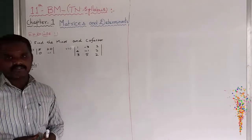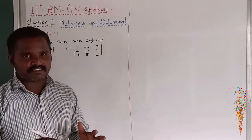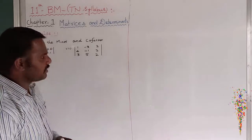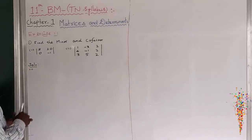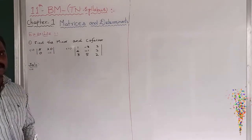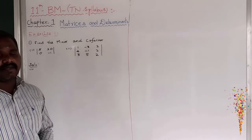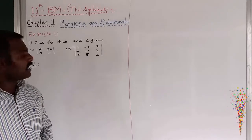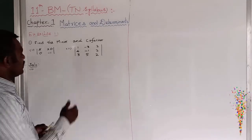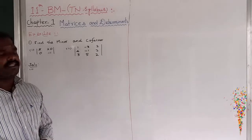So what is the first question? Find the cofactor and minor of the given determinants. They have given two questions in the first one. The first is a 2 by 2 matrix and the second one is a 3 by 3 matrix. So let us start with the first question.